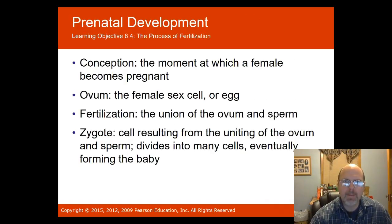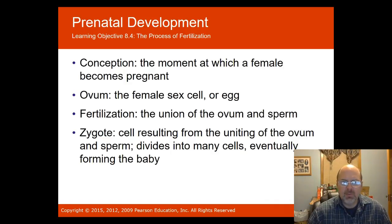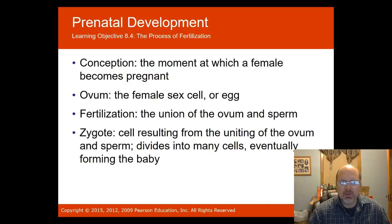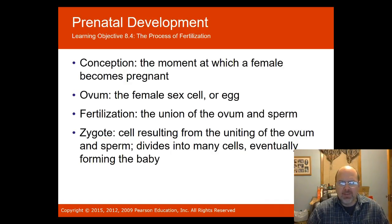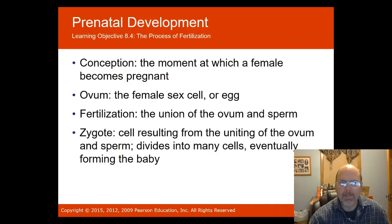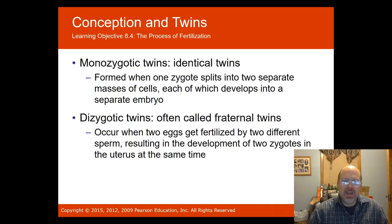Development begins from conception — the moment a female becomes pregnant when the sperm meets the ovum. Fertilization occurs when the ovum and sperm meet. The zygote is the cell that results from the uniting of the ovum and sperm; it then divides many times, eventually forming the baby.